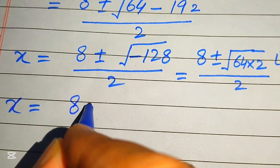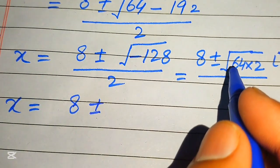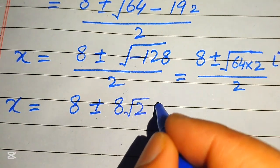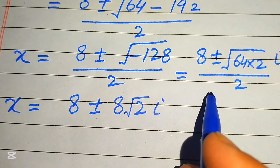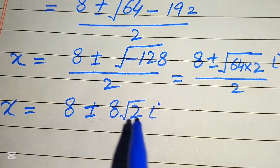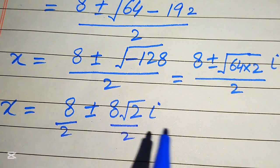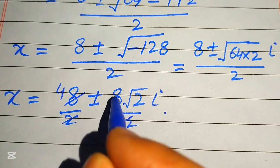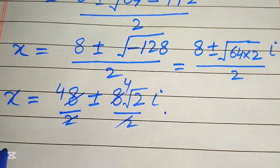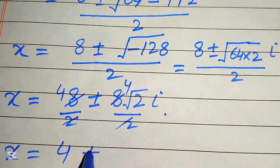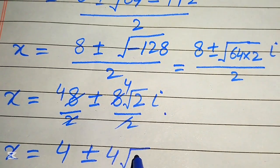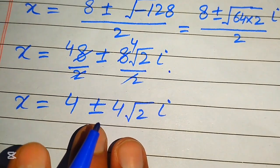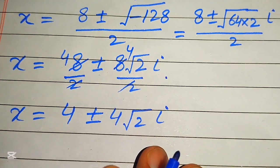So the value of x equals 8 plus or minus — the square root of 64 becomes 8 — times square root of 2 times iota, divided by 2. We cancel the 2 from both the 8 and the 8, and we get the values of x equals 4 plus or minus 4 times square root of 2 times iota.